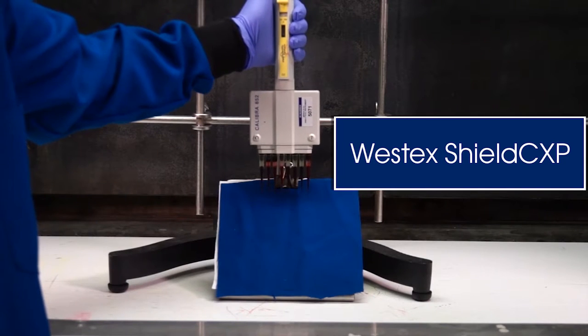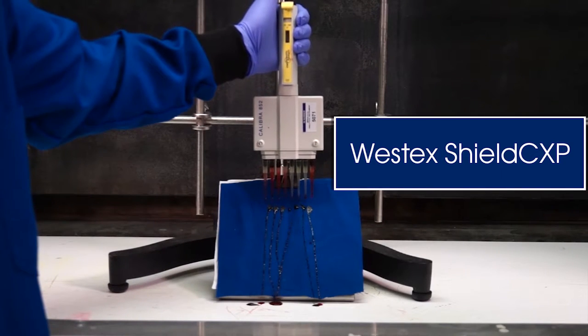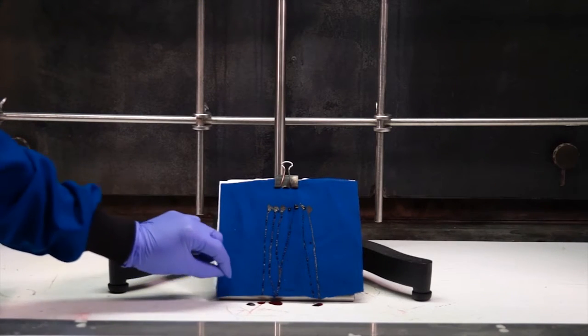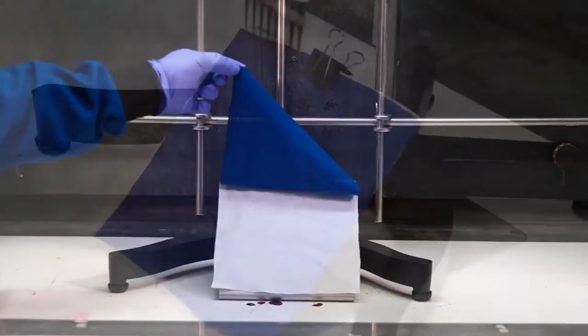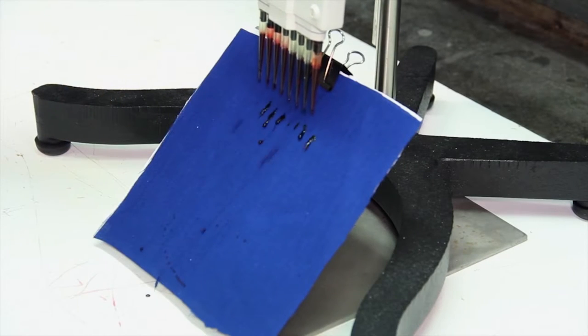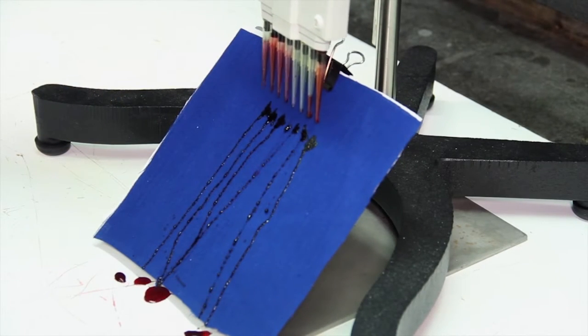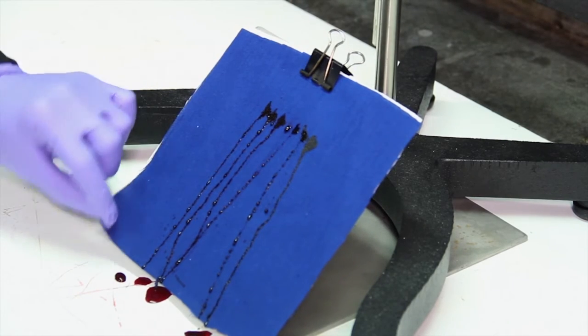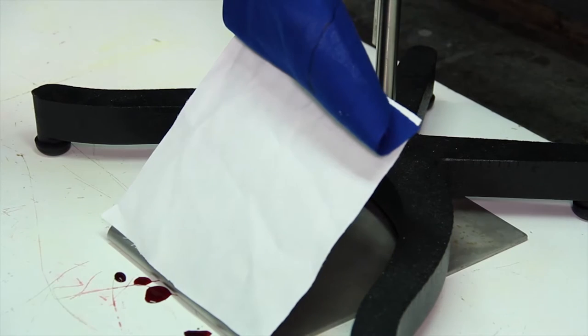Everything is rolling off the surface. It's repelled. This is at a 45 degree angle, which mimics how it would be worn in the field. And you have nothing goes through to the backside. So you have protection and resistance against those types of chemicals and those types of solvents.